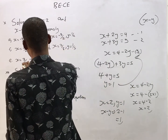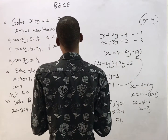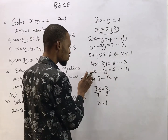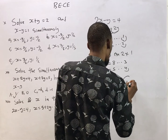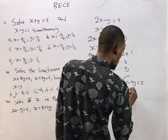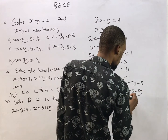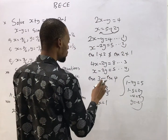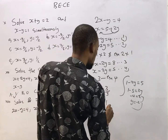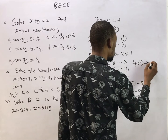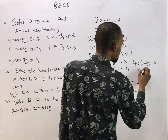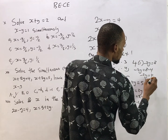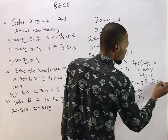For the first question, the answer is y equals 1 over 2 and s equals 3 over 2. You can verify by substituting s equals 1 into either equation — for example, in equation 2: 1 minus 2y equals 5 gives minus 4 equals 2y, so y equals minus 2. Substituting into the other: 1 minus 2y equals 8, giving minus 2y equals 4, so y equals minus 2. The values are consistent.